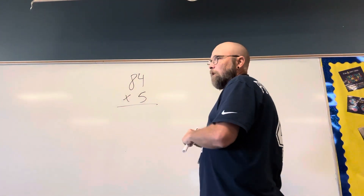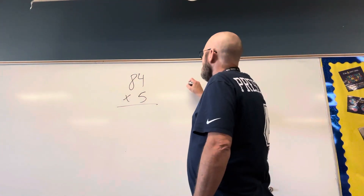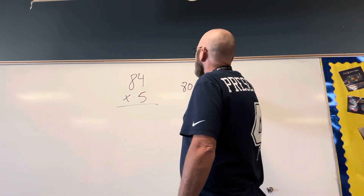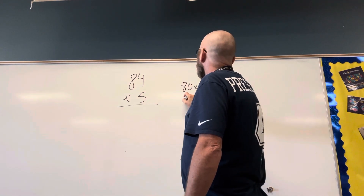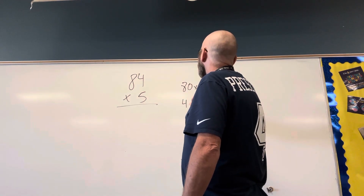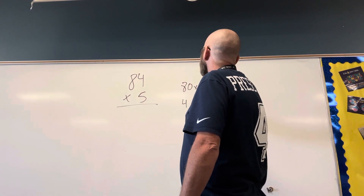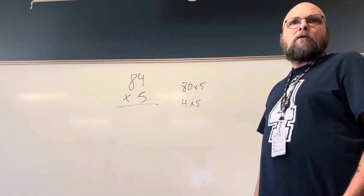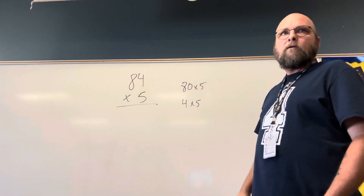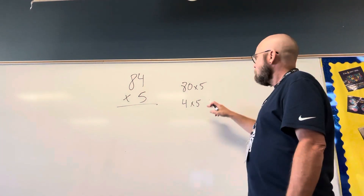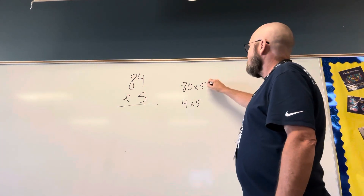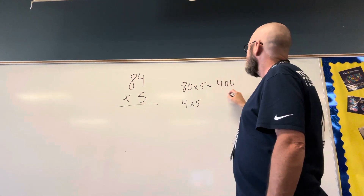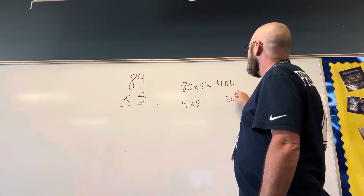Now we could break it up and do 80 times 5 and 4 times 5. 80 times 5 is 400, and 4 times 5 is 20.